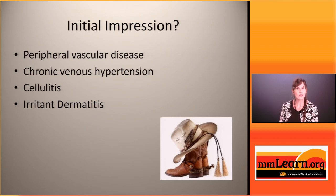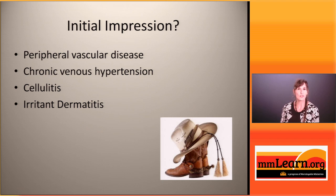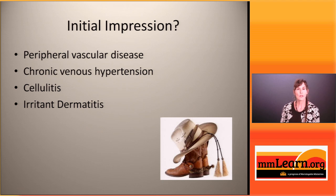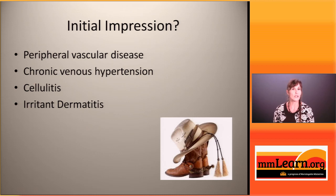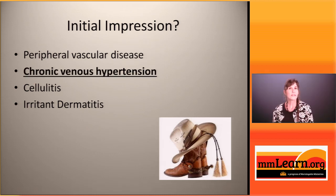What is your initial impression of this patient? Do you think he has peripheral vascular disease or diminished arterial supply to his legs? Could this be chronic venous hypertension? There is a lot of discoloration in his legs. Do you think this could be cellulitis or infection of the soft tissues? Or perhaps irritant dermatitis? This patient has chronic venous hypertension with stasis dermatitis.